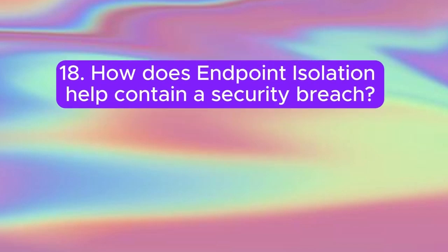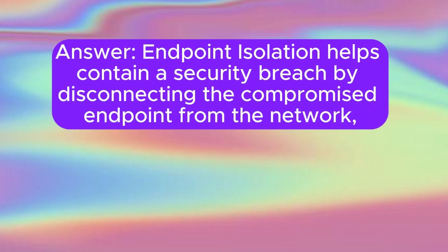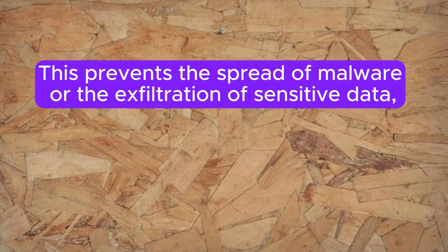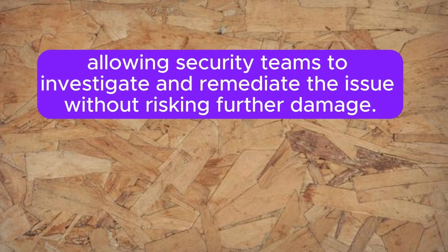Question 18: How does endpoint isolation help contain a security breach? Endpoint isolation helps contain a security breach by disconnecting the compromised endpoint from the network, limiting its ability to communicate with other devices. This prevents the spread of malware or the exfiltration of sensitive data, allowing security teams to investigate and remediate the issue without risking further damage.